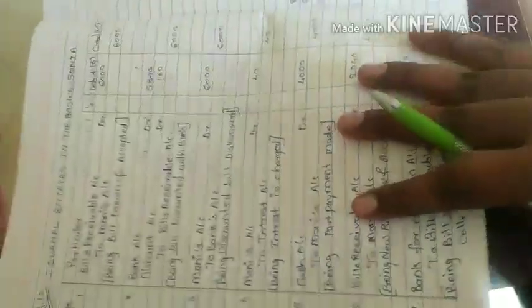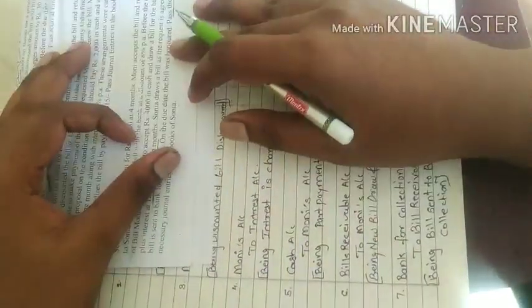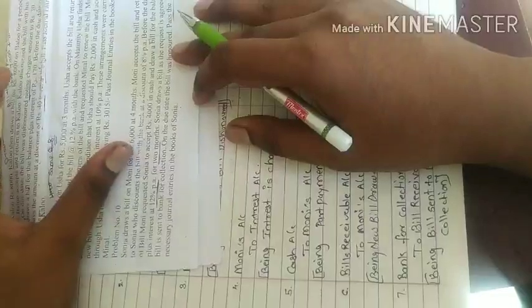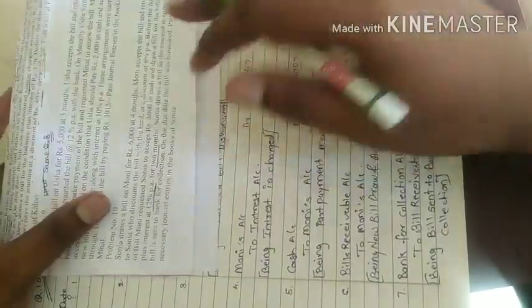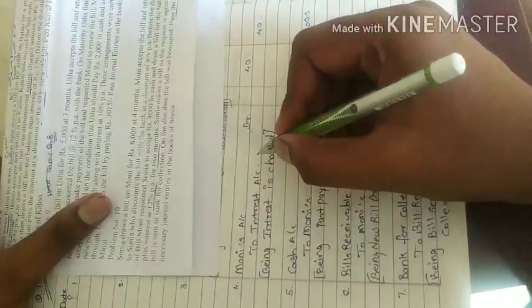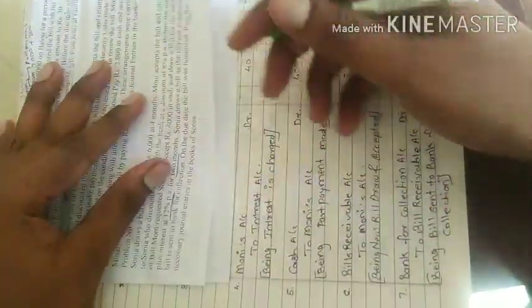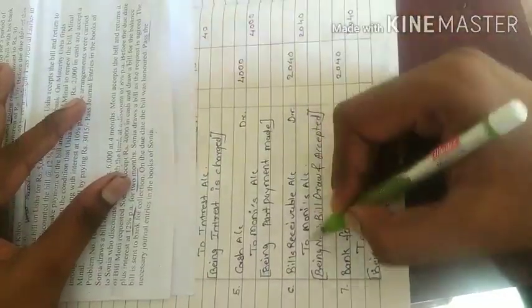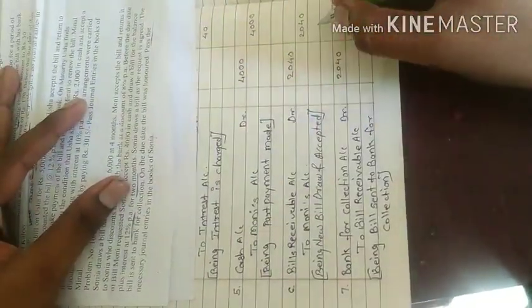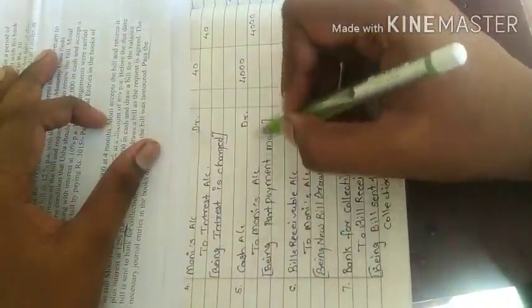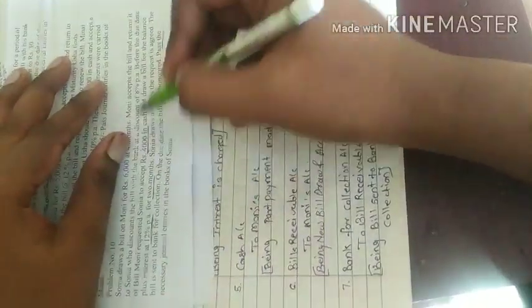Nominal account, credit all income and gain, debit all expenses and losses, credit all income and gain. Interest income, interest credit side, debit. So new bill along with interest, bill receivable account debited to Money's account, 2,040. 2,000 bill plus 40 rupees interest, 2,040. This was part payment entry, cash and bank account debited to Money's account, 4,000. Part payment.